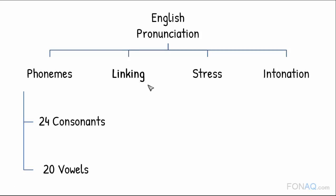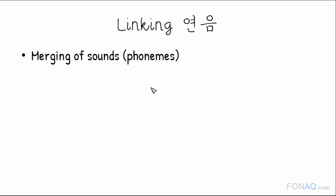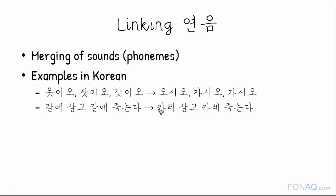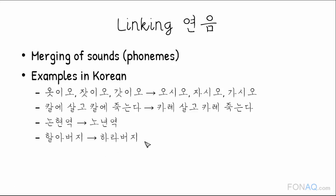The second component of pronunciation we'll look at is linking. Linking refers to the merging of sounds. In Korean, we read 왔지요 as watchiyo, 자지요 as jatiyo, 갔지요 as katsiyo — not otiyo, jatiyo, katsiyo. Likewise, 가래 살고, 가레중누다, 니녁 할아버지 are read with merged sounds. This kind of phenomenon, where two different phonemes are merged into one, is called linking.